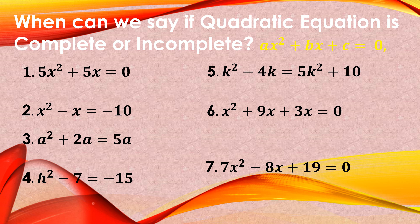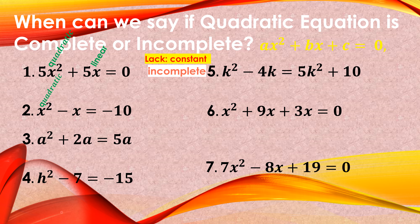When can we say a quadratic equation is complete or incomplete? Remember the standard form has the quadratic term, the linear term, and the constant term, all equated to 0. For number 1 — 5X squared is the quadratic term and 5X is the linear term, so the constant term is lacking. Therefore that is incomplete. For number 2 — X squared is the quadratic, X is linear, and 10 is the constant. All three terms are present, so this is a complete quadratic equation.